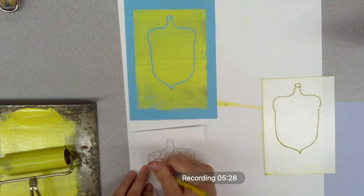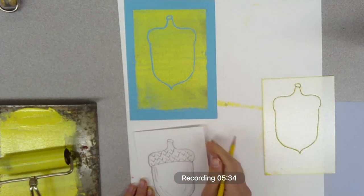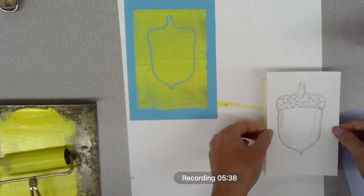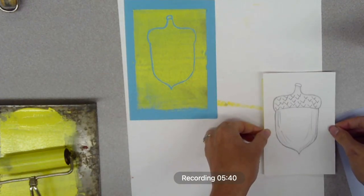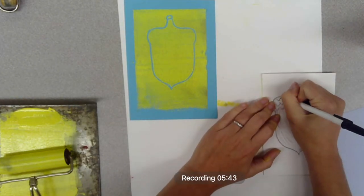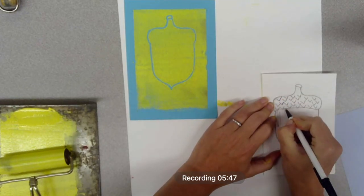I could do this directly on the styrofoam because I trust myself, but for those of us that might be a little nervous, we do it on the paper first. Put the paper back onto the styrofoam and do that whole process. Now you're just tracing over the new bits that you've drawn.